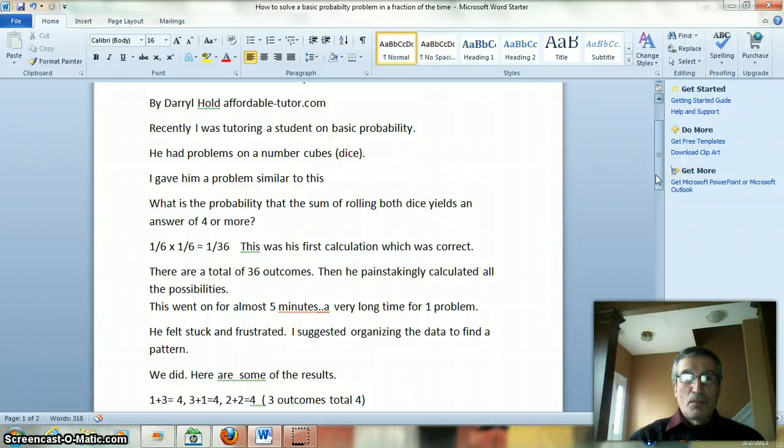What is the probability the sum of rolling both dice yields an answer of 4 or more? 1/6 × 1/6 is 1/36. This was his first calculation which was correct. Now there's a total of 36 outcomes. He painstakingly calculated all the possibilities.